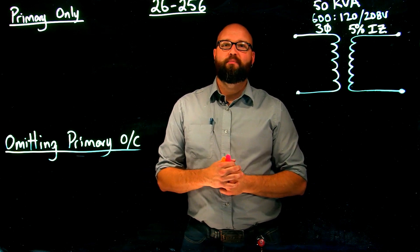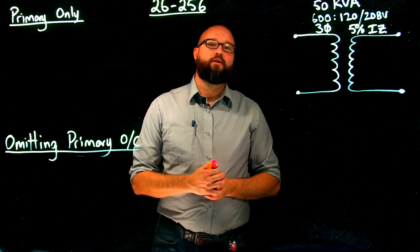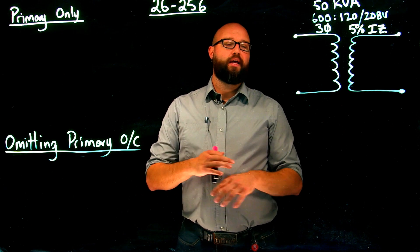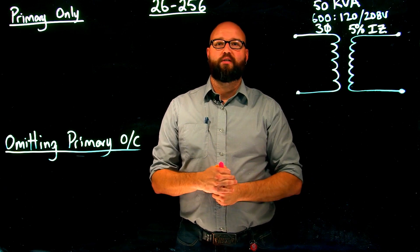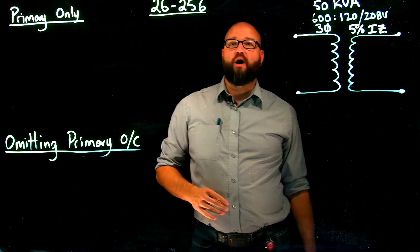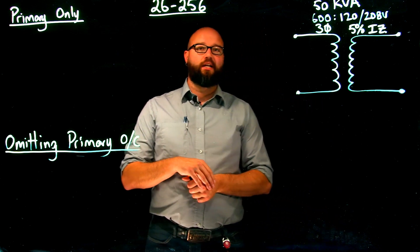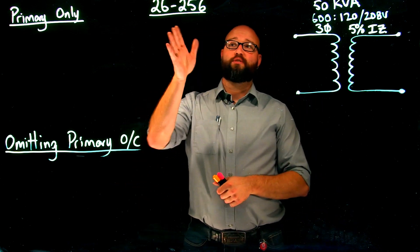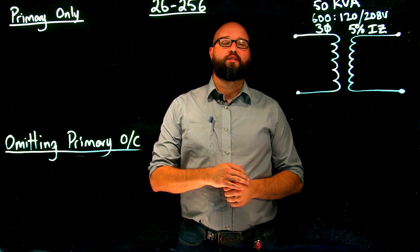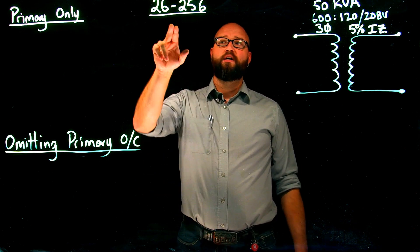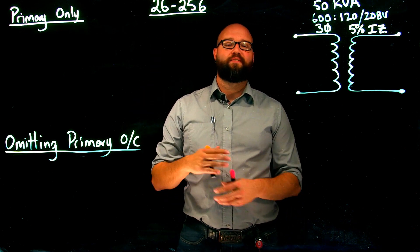Hey, how you doing? Thanks for joining me again. This is the second part in a four-part series on calculating overcurrent sizes for transformer installations based off of the 23rd edition of the Canadian Electrical Code specific to Section 26. In this video, we're going to take a look at 26-256 specifically.